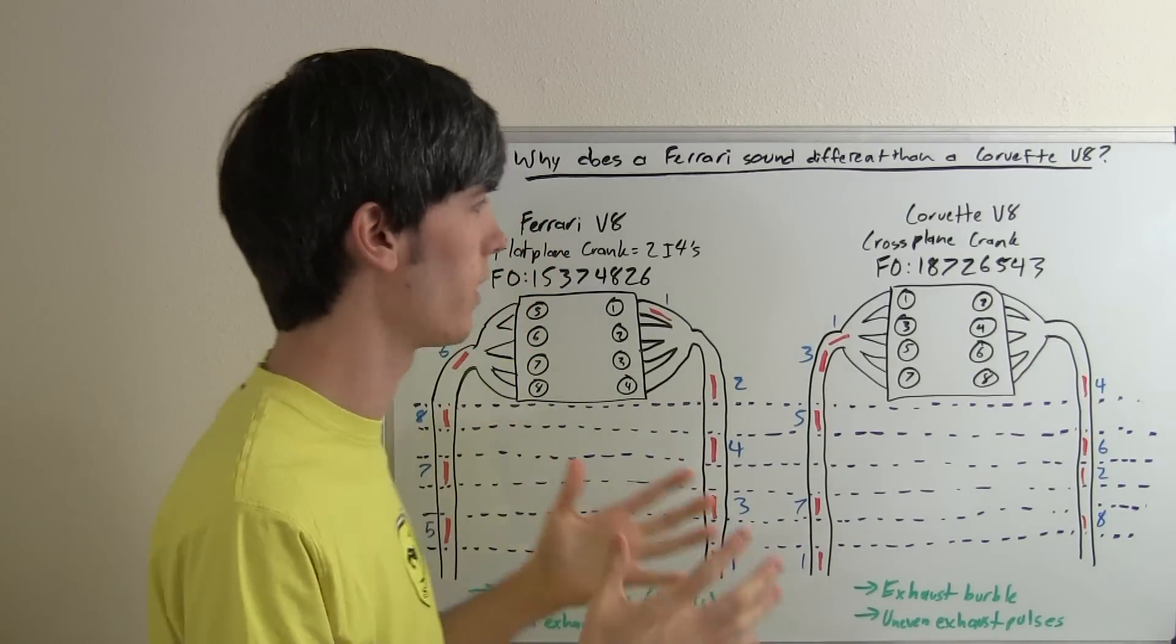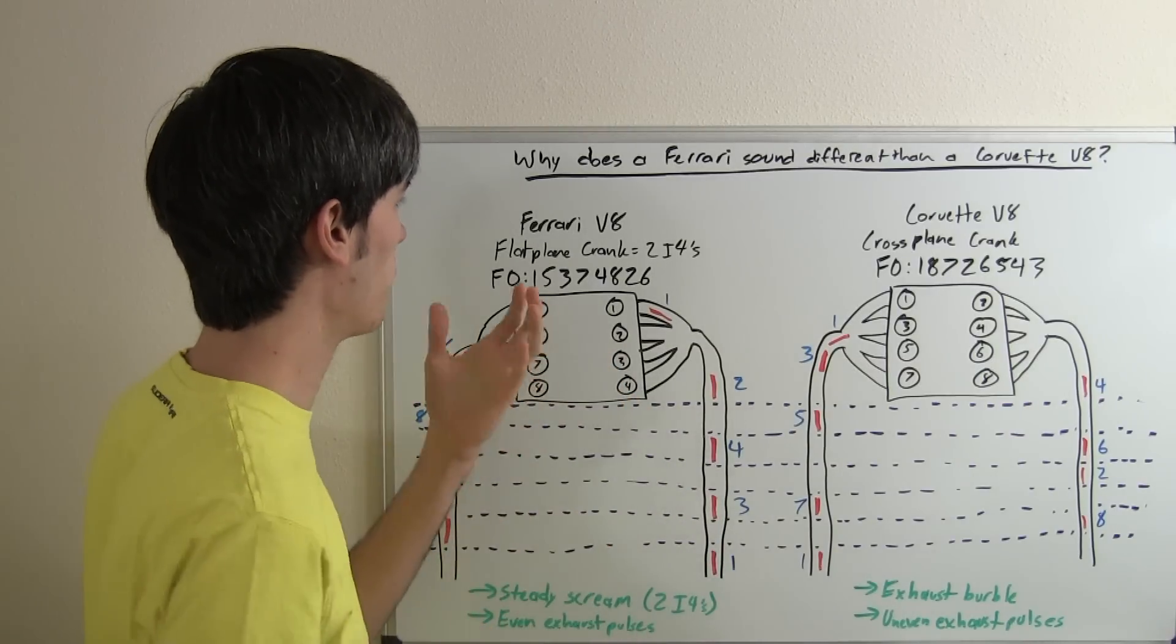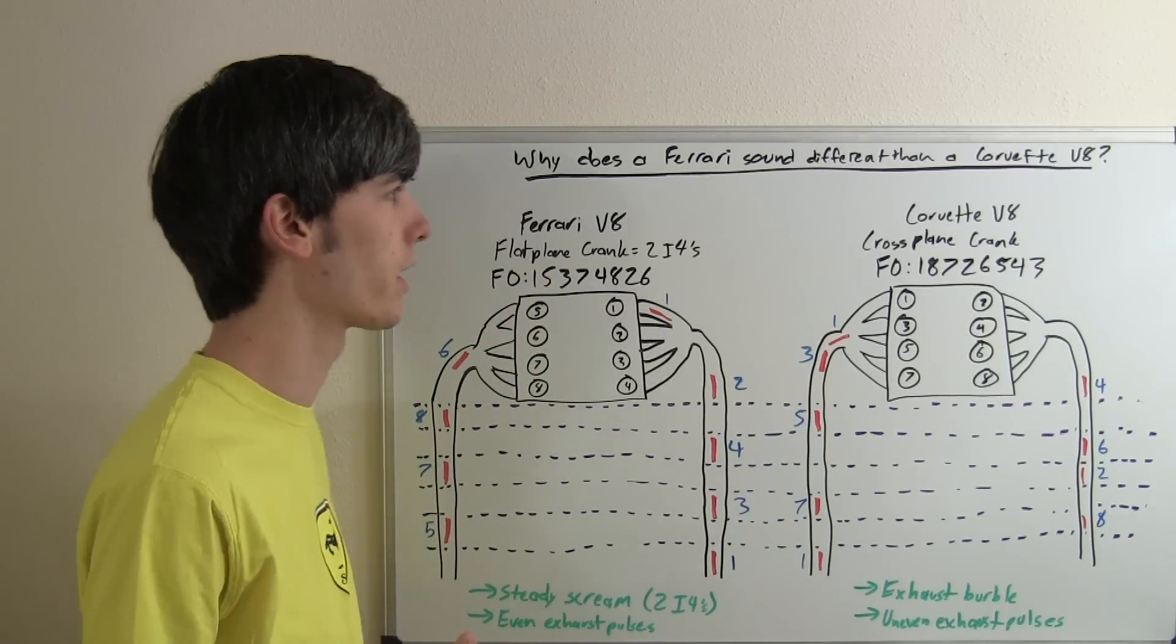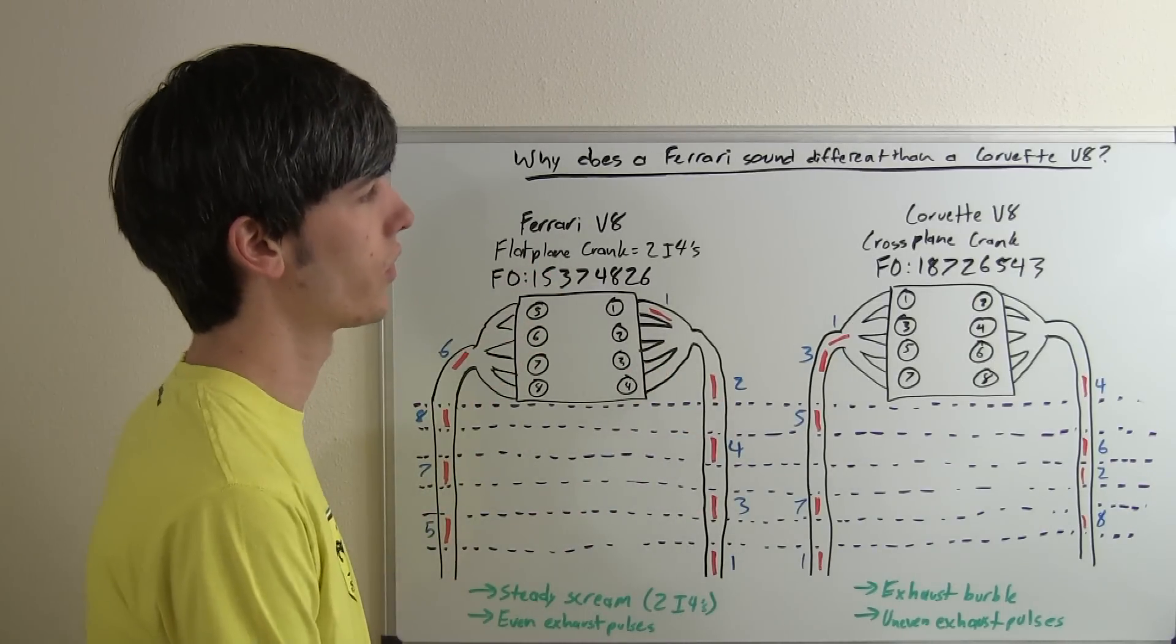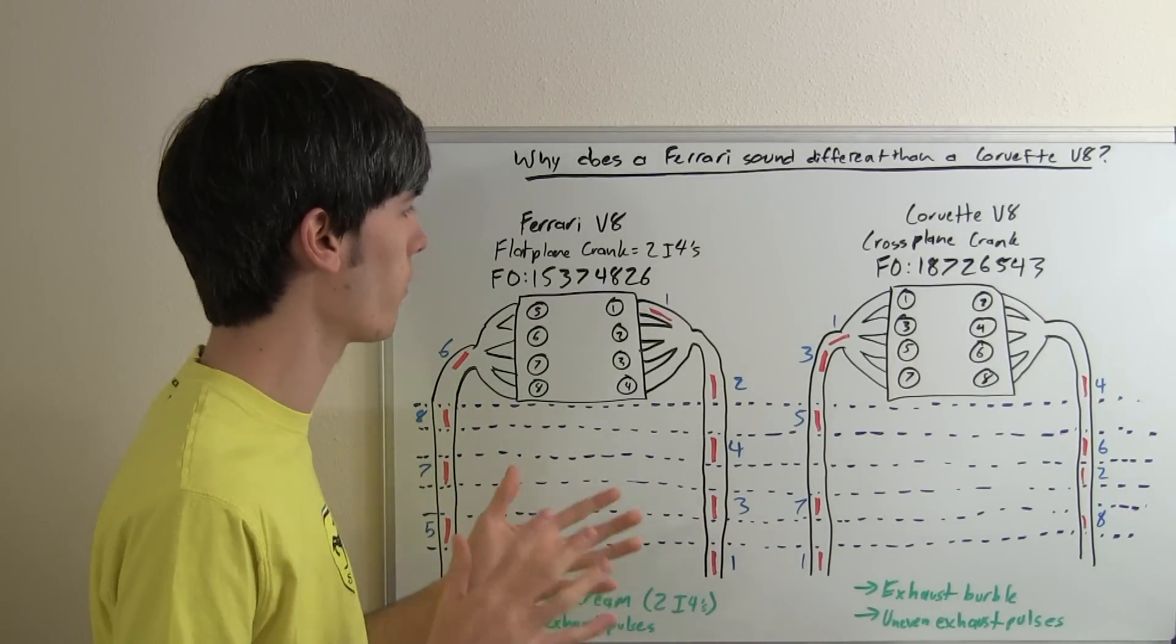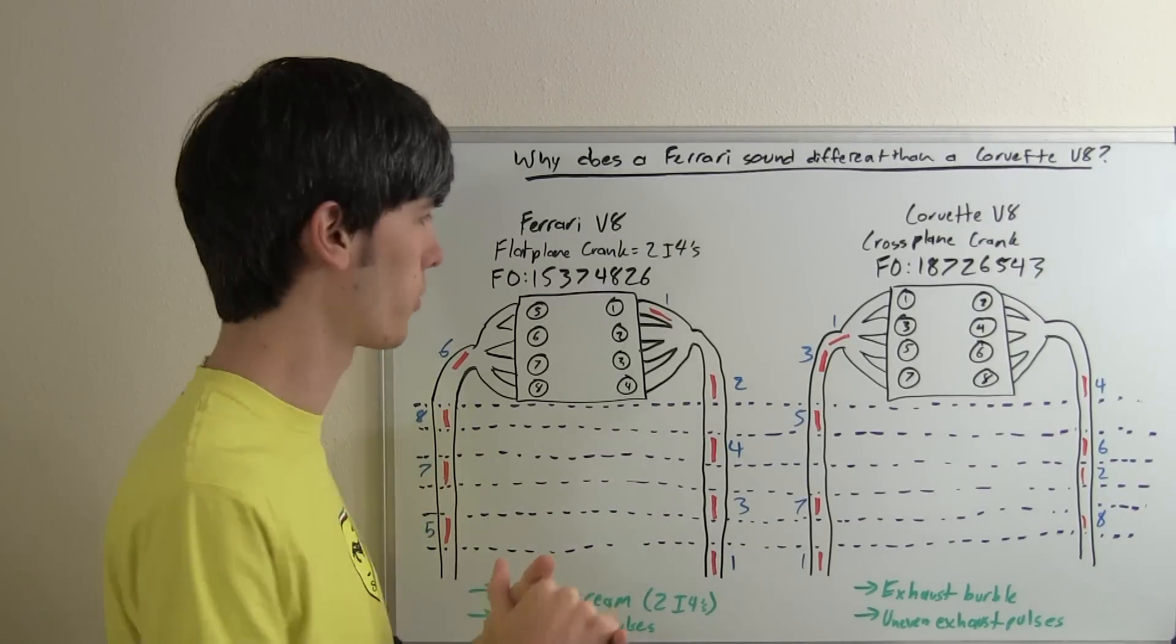Now the main difference is the design of the crankshaft. So the firing order is what's going to be different because of this different crankshaft. A Ferrari V8 uses a flat plane crank, and a Corvette uses a cross plane crank. I've already made a video explaining the two of these, so if you haven't watched that yet, you may want to check that out first. I will include a link in the description.